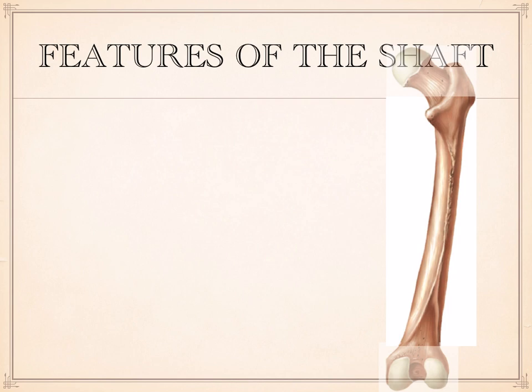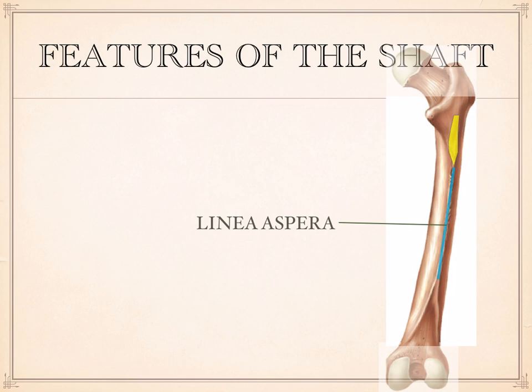Moving to the shaft, there are just two features to learn. The roughened line down the back of the bone, colored blue here, is known as the linea aspera. Superior to that is a roughened area that widens as you move proximally on the bone, referred to as the gluteal tuberosity — which is, of course, an attachment site for the gluteus maximus muscle.